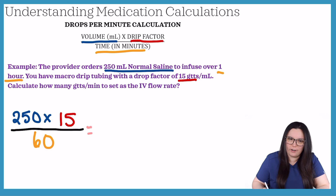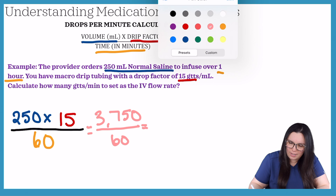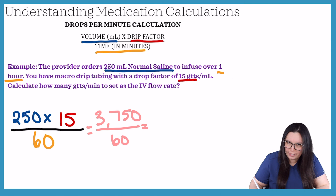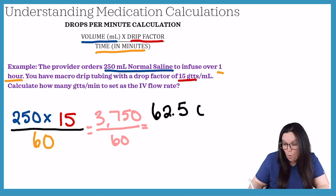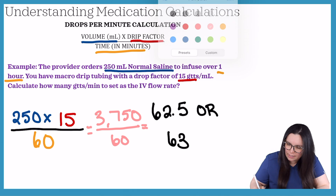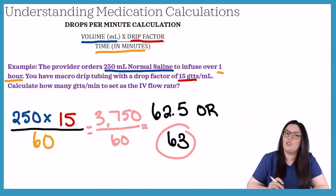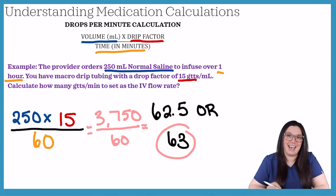Doing our calculations, this gives us 3750 over 60. Finishing this out, we get 62.5, or 63 drops when rounding. The correct answer is 63 or 62.5 depending on what your dosage calculation exam has.